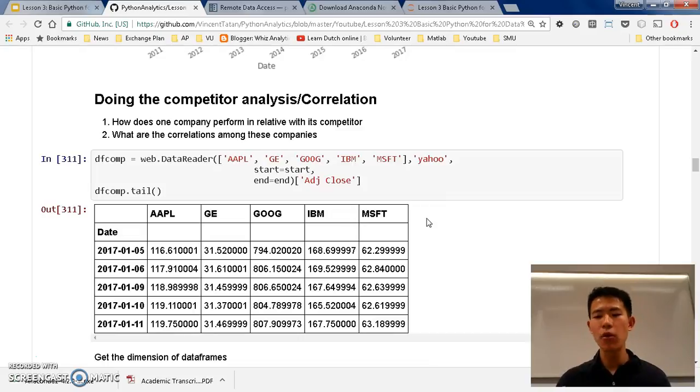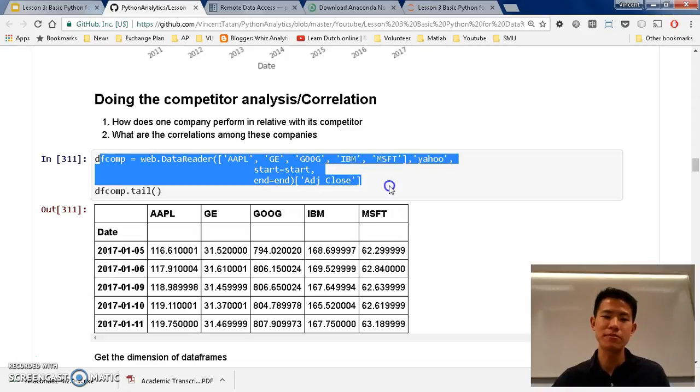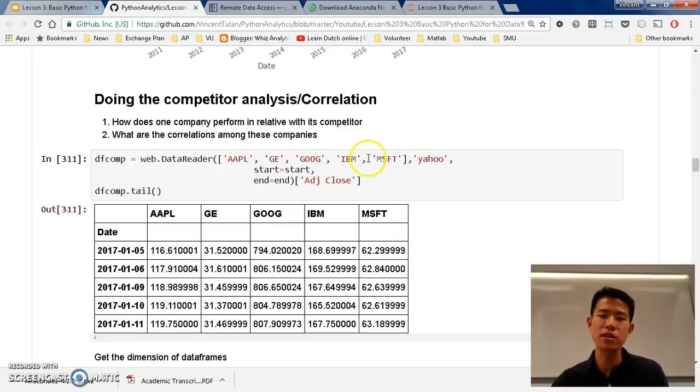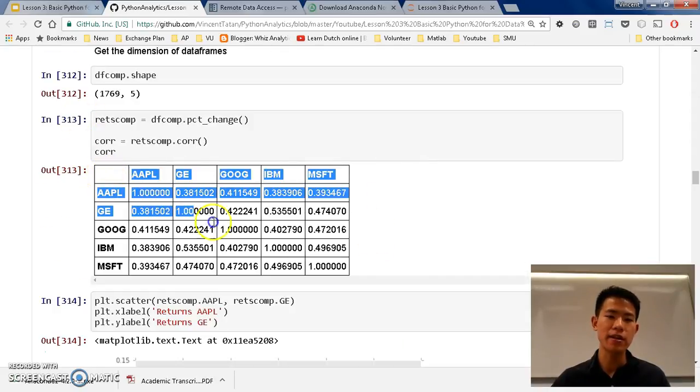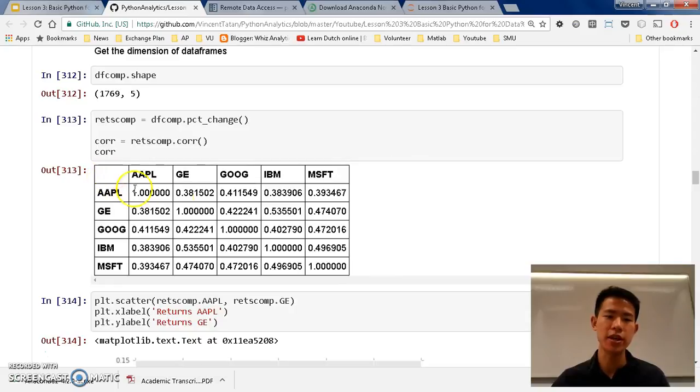Then afterwards, one more important thing that maybe people do not do and cannot do just by comparing with Yahoo Finance one by one is doing competitor analysis. It's very simple. Just get the data by using web data reader. Apple, GE, Google, IBM, Microsoft, those are very close competitors. And afterwards, we change it in a way that it gives a percentage change for each different company in a very nice looking matrix.